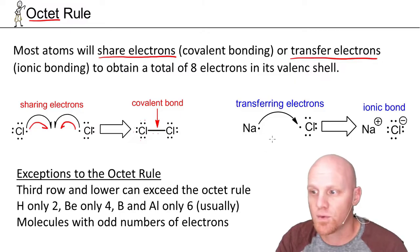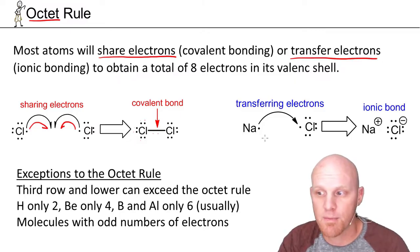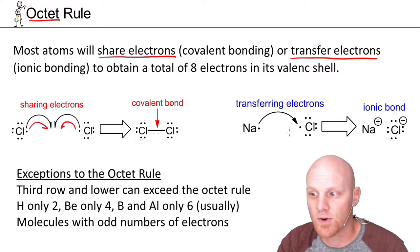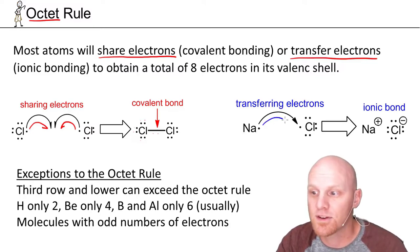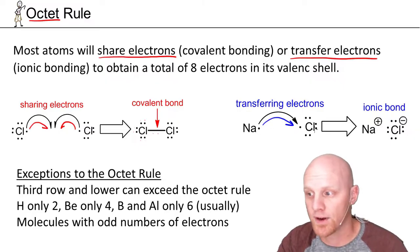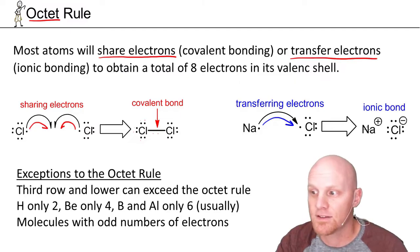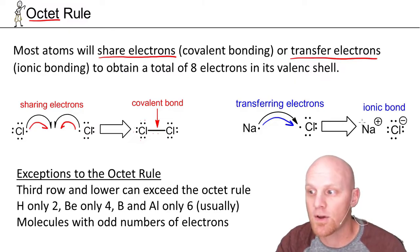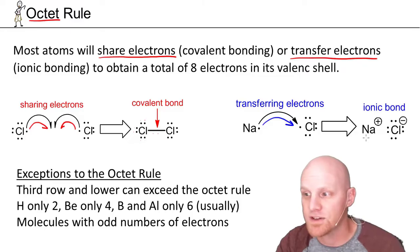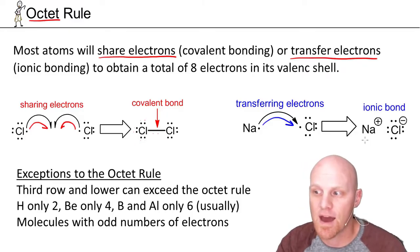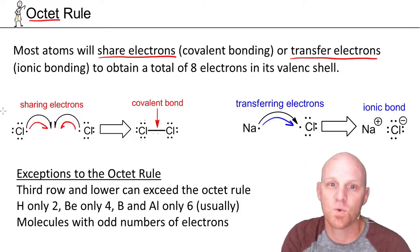The other way of accomplishing this would be through the transfer of electrons, typically from a metal to a nonmetal, as is the case with sodium and chlorine. Sodium's got one valence electron, chlorine's got seven, and sodium is going to send its only valence electron over to chlorine. That leaves chlorine with eight and a filled octet. And sodium now has a filled octet for the previous shell. They both can claim having a filled octet.